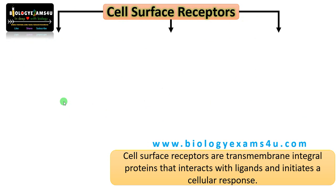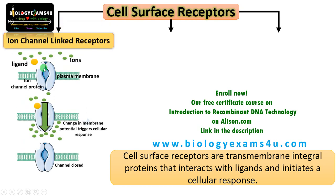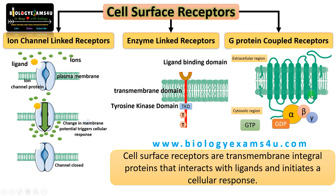Cell surface receptors are transmembrane integral proteins that interact with ligands and initiate a cellular response. Integral proteins means that it is embedded on the cell plasma membrane. The first type is the ion channel linked receptor, which is linked to an ion channel protein that permits movement of ions across the plasma membrane. The second is the enzyme linked receptor, which has an enzymatic domain or intrinsic enzyme activity. The third is the G protein coupled receptor, which is bound to a complex protein called G protein.